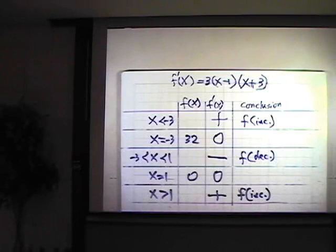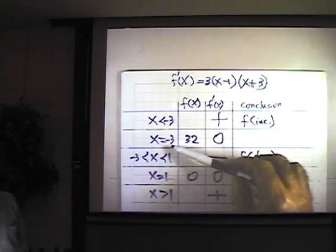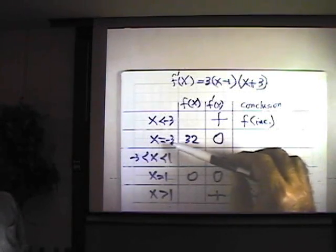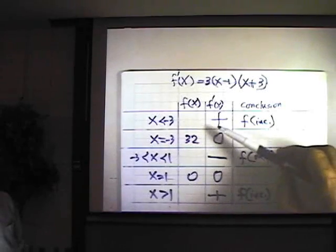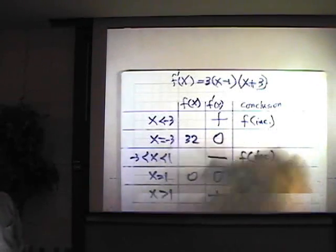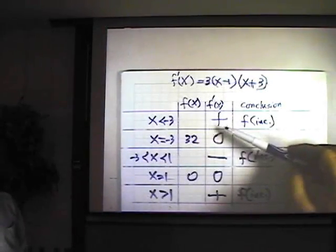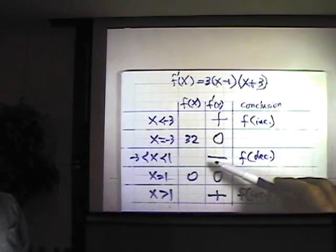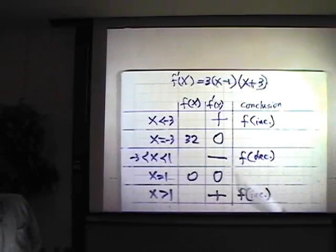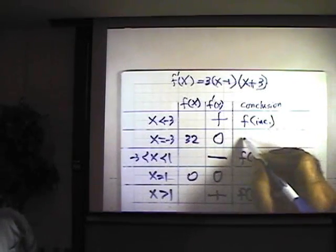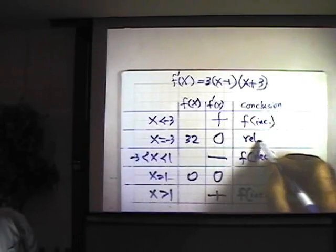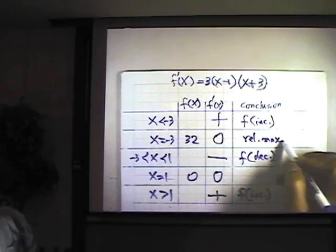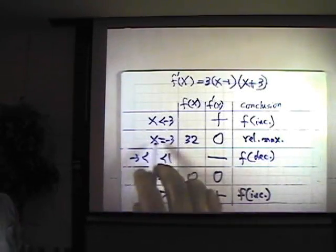Now I can apply the first derivative test finally. This is the critical point, x equals negative 3. As we go through this, we see that in some open interval around negative 3, f prime is positive just before that, and negative after that. So that's an indication that we have a relative maximum, relative max at this critical point.